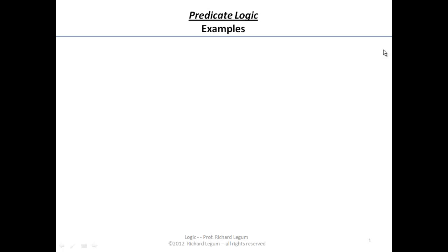We saw how to prove that where there's a logically strong connection, that is what we call a valid form of inference or a valid argument. Now I want to spend some time on what we're going to call predicate logic — a certain class of arguments, a certain kind of inference.